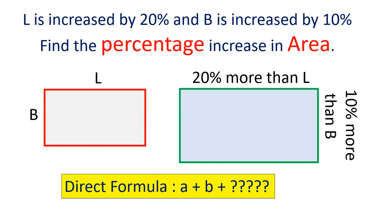There is a rectangle with L and B and L has increased by 20% and B has increased by 10% and we have to find out percentage increase in the area. And of course there is a direct formula for that which we will see at the end of the video. Let's see how we can solve the question.